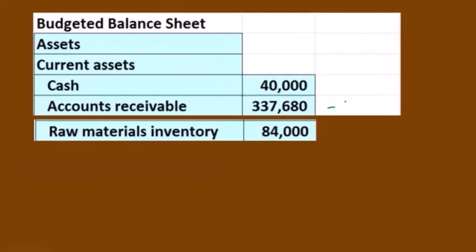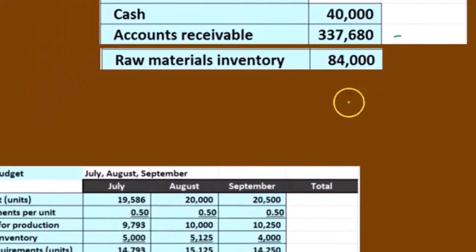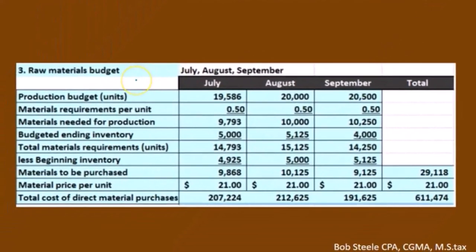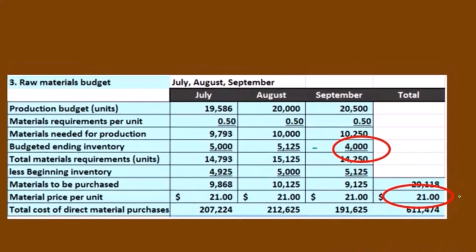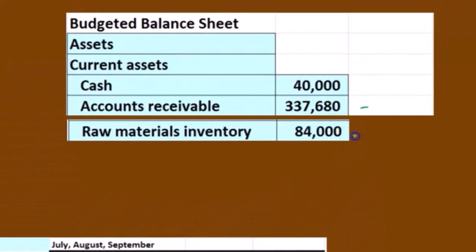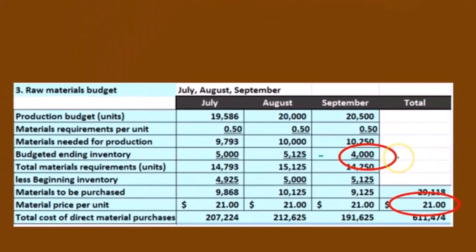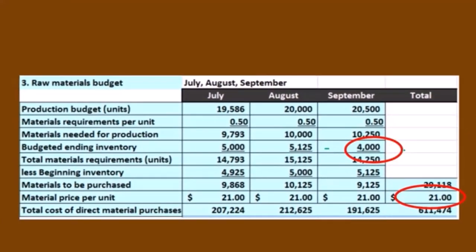The next item is raw materials. We take that from step three — the raw materials budget. We take the ending balance in units and multiply it by the $21 per unit price, giving us an ending raw materials balance of $84,000. Remember, what we're looking at is where we stand at the end of the time period, so we use the ending amount from that budget on our balance sheet.